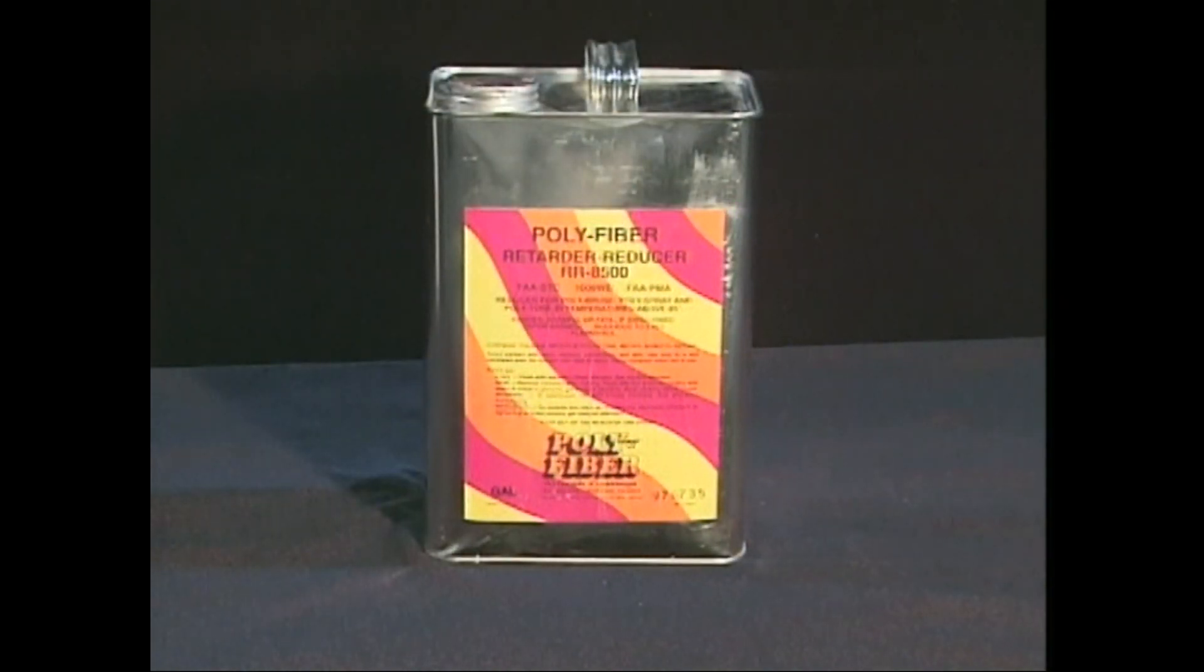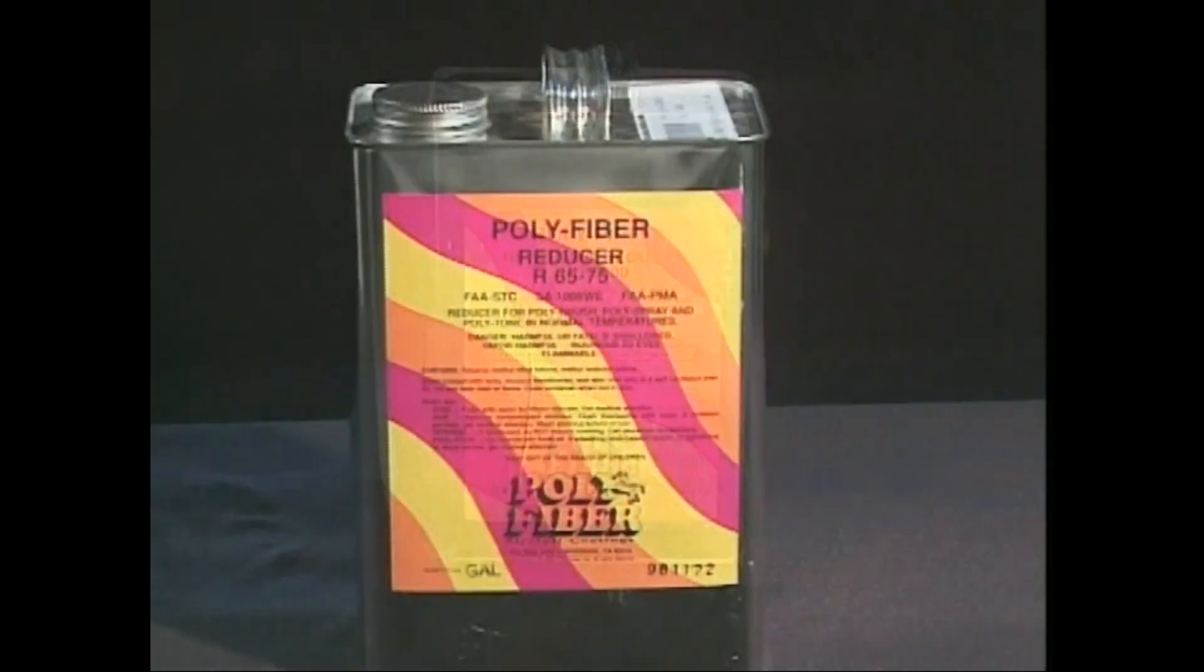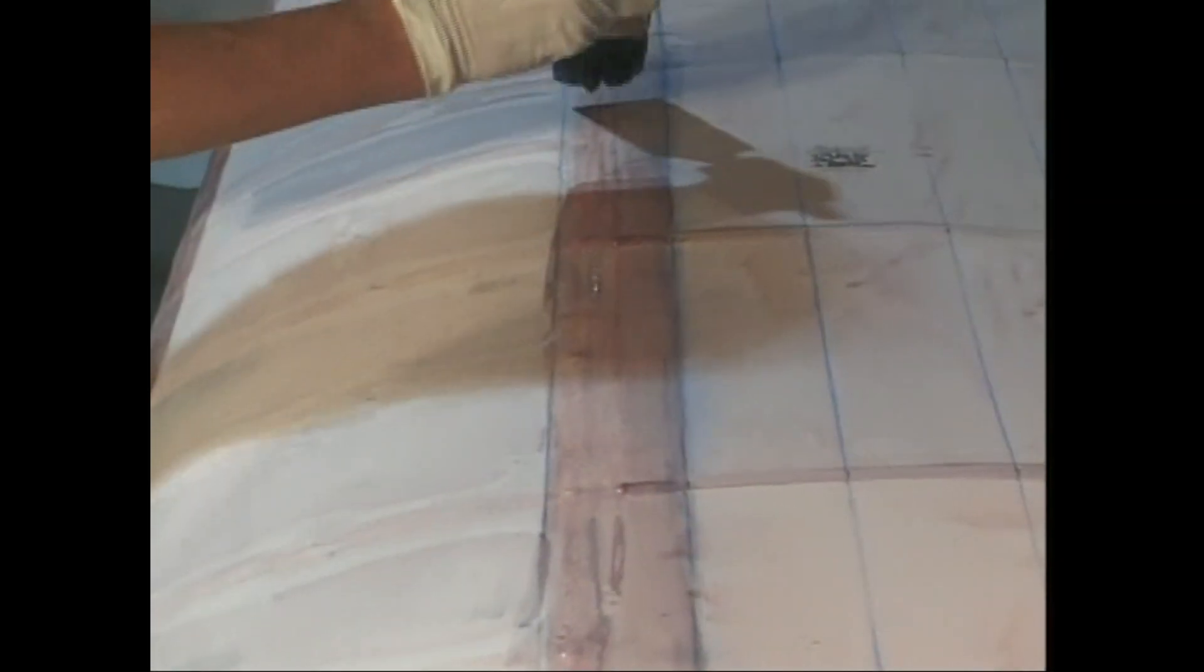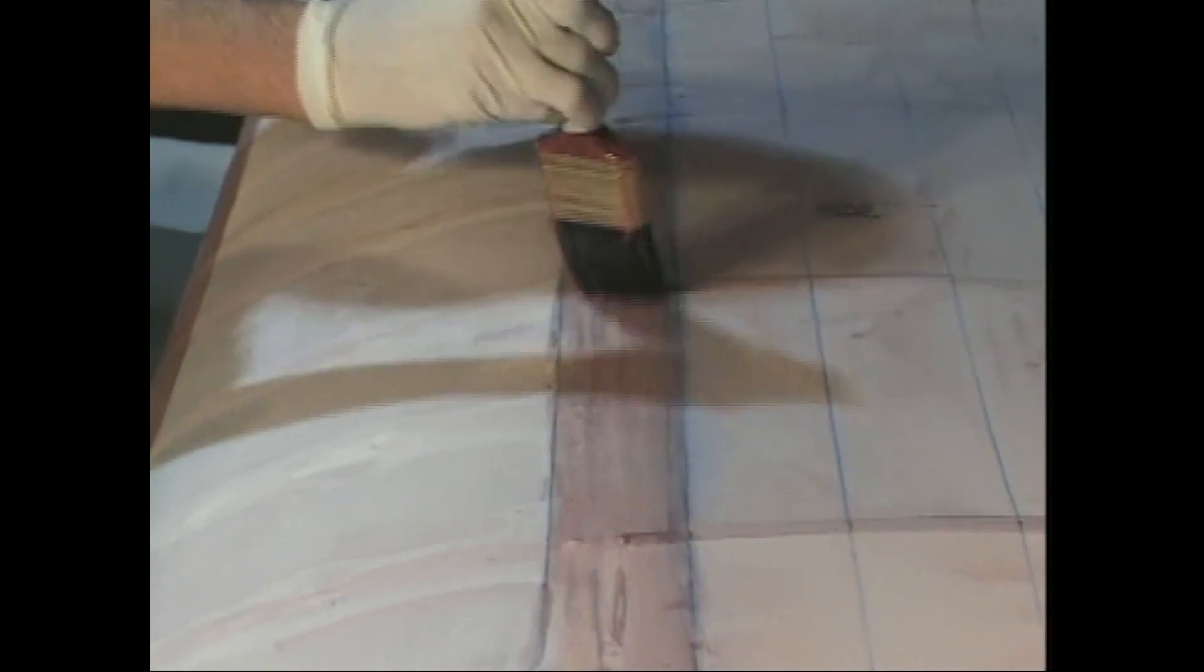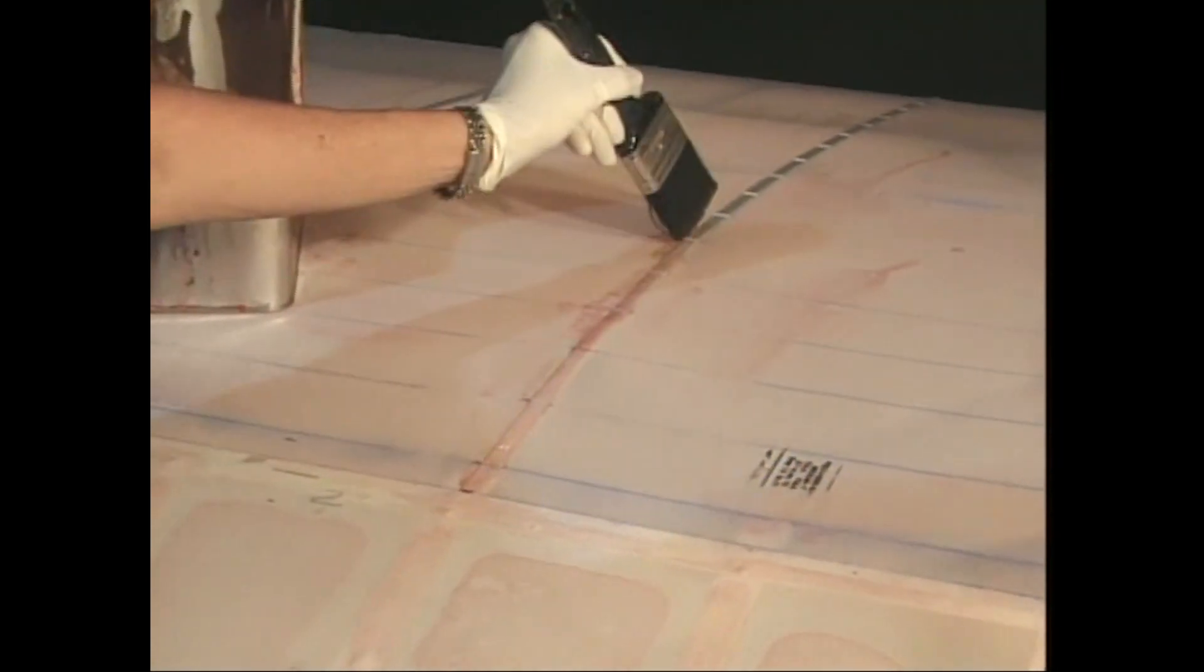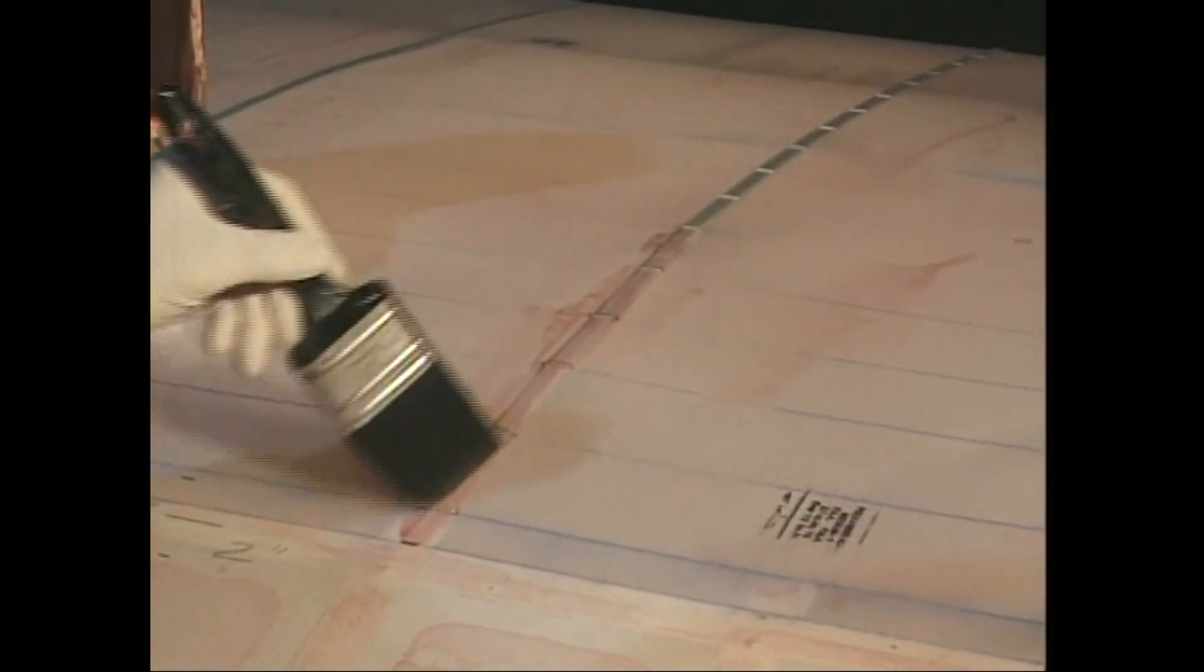Remember, you'll be using either RR8500 or R65-75 reducer depending on the temperature in which you are working. You will use a two inch brush for applying the bed coat. You will use the same brush for applying the tapes. A natural bristle brush is best since you can soak it in MEK for cleaning purposes without harming the bristles.